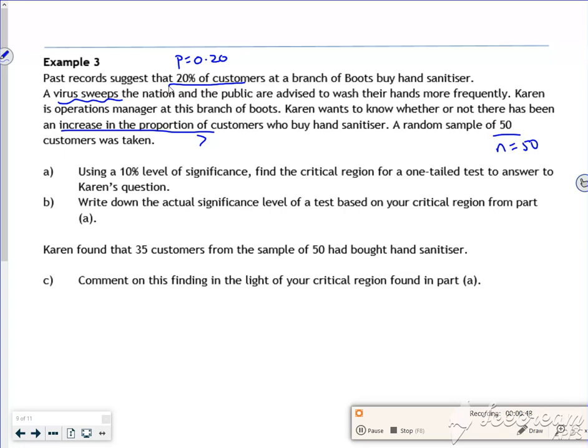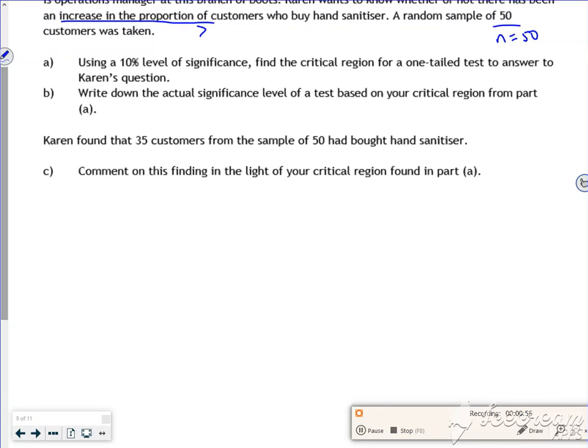So it says here, using a 10% level of significance, find the critical region for the one-tailed test. Right, so let's set the test up then. So let X equal the number of people who buy hand sanitizer.